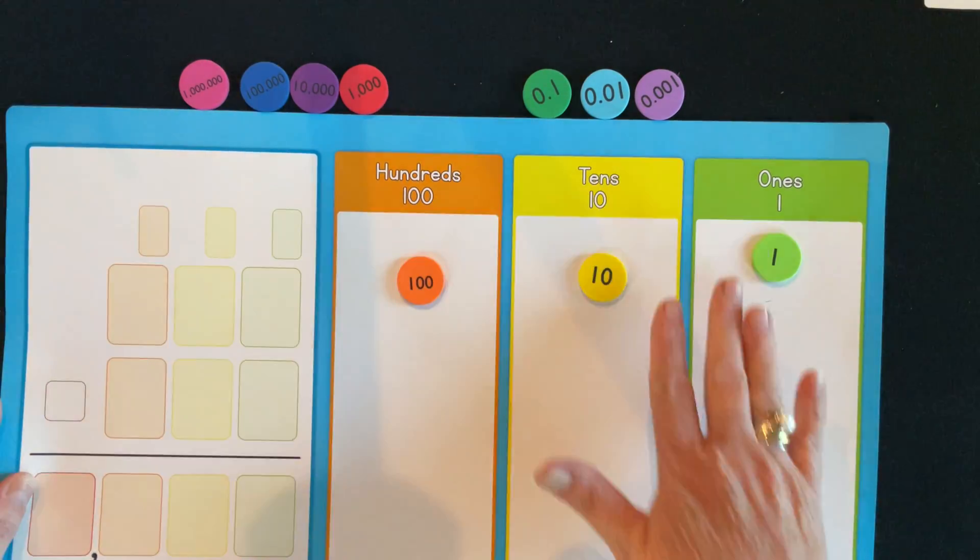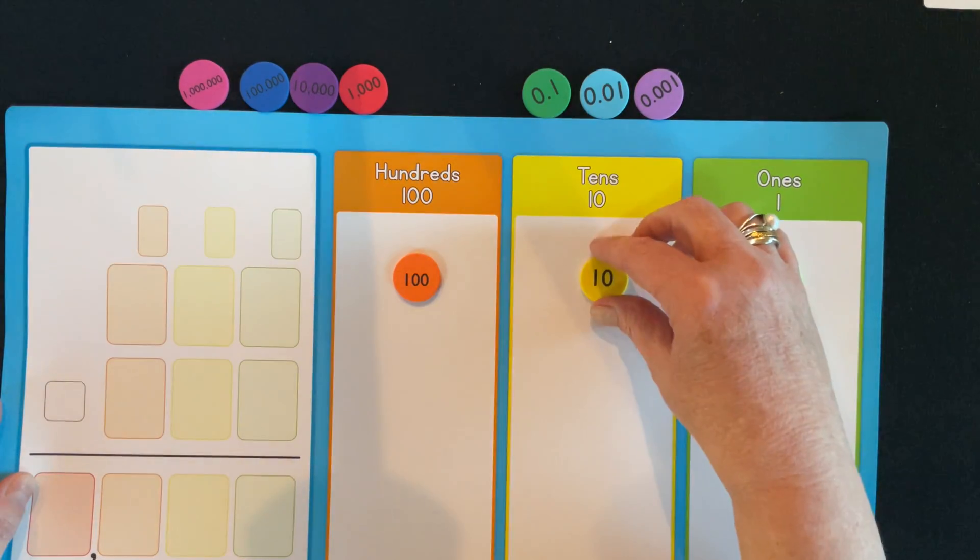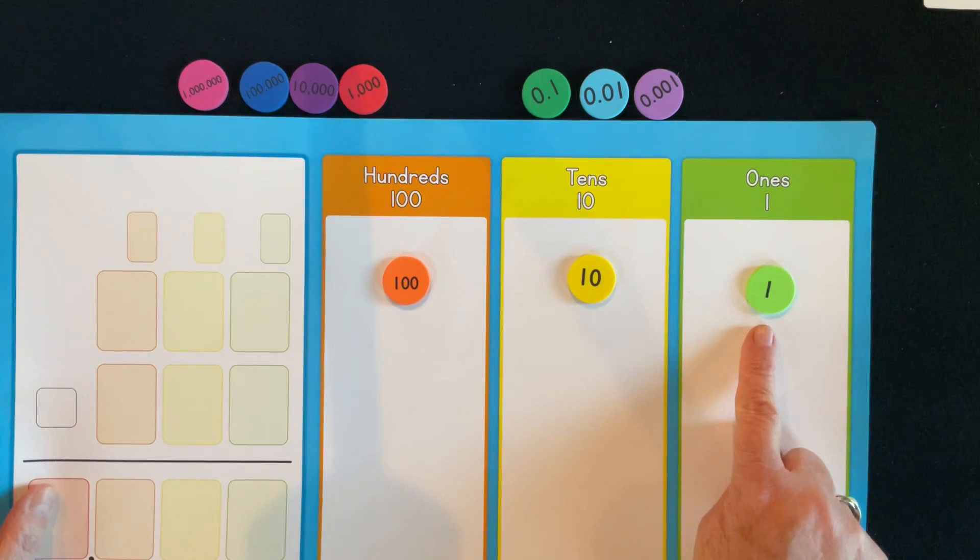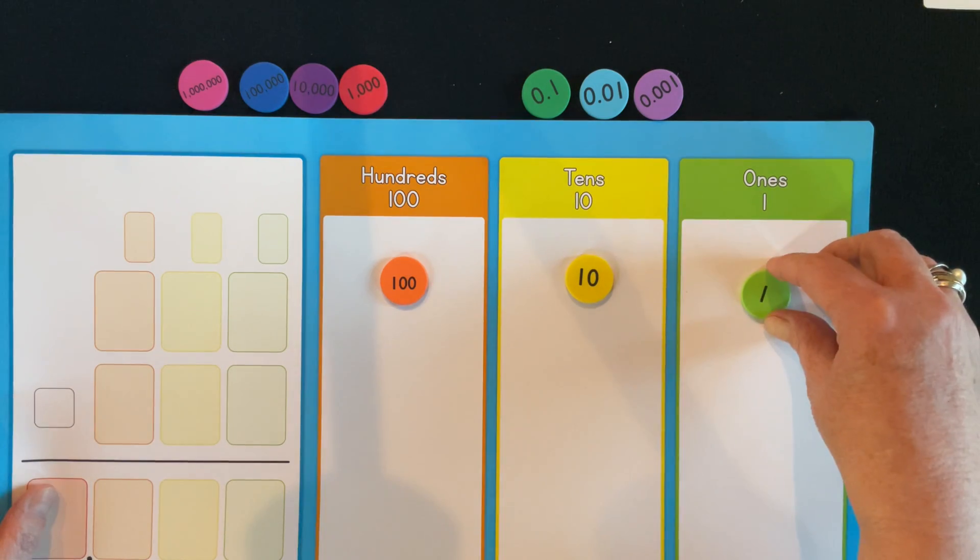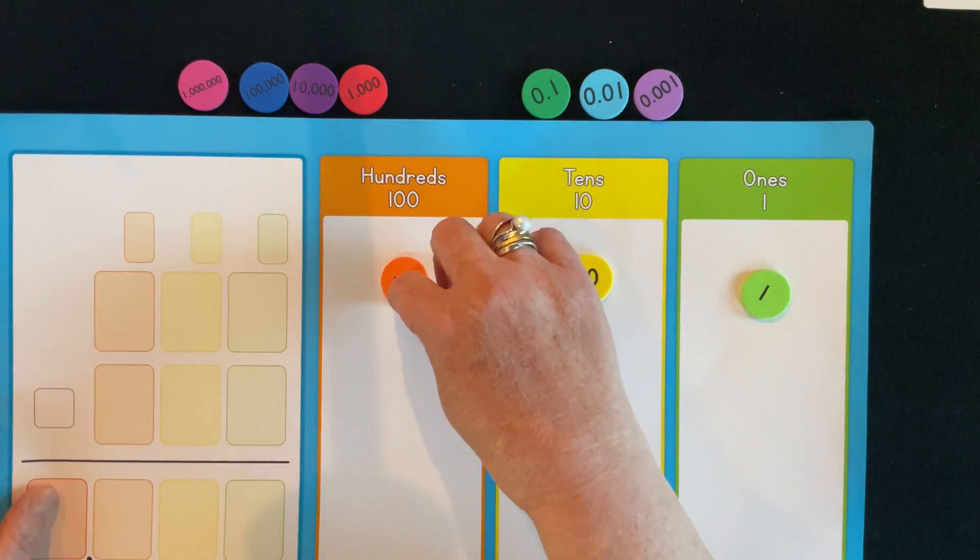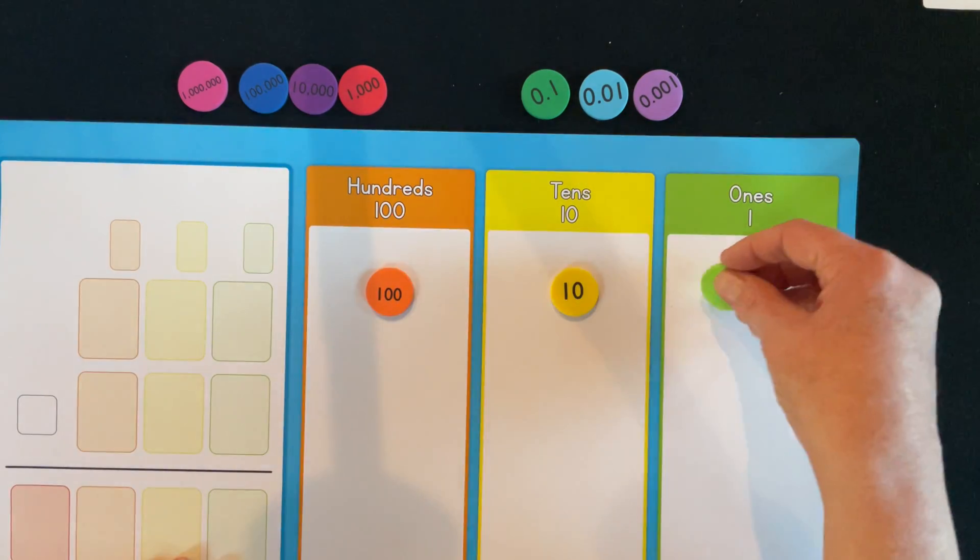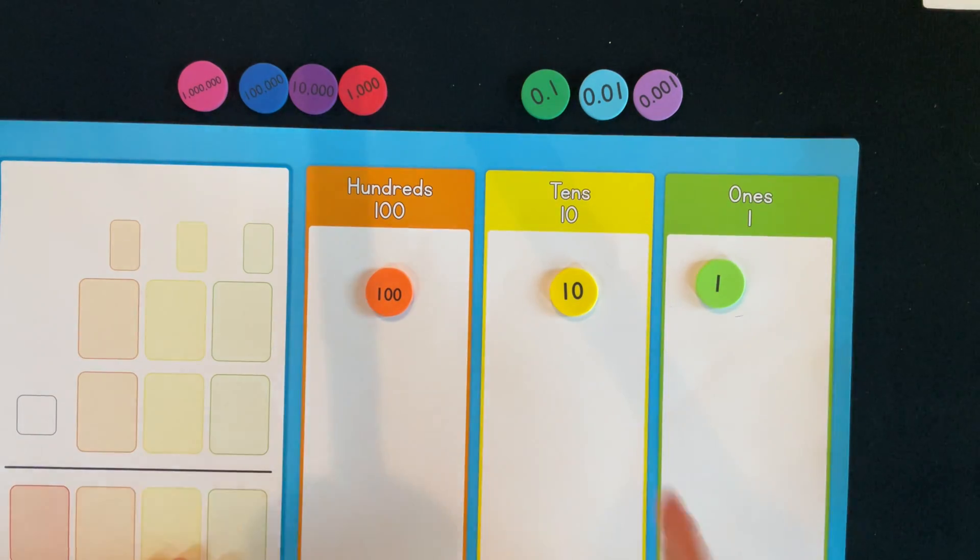These will actually help kids, especially those who may need some additional support when they're first not really understanding that this actually is one one, this is one ten, this is one hundred. The color coding will help them match up the colors of what's in the ones place value, what's in the tens, and what's in the hundreds.